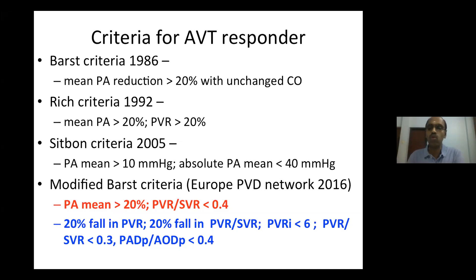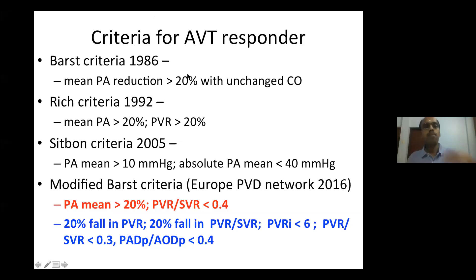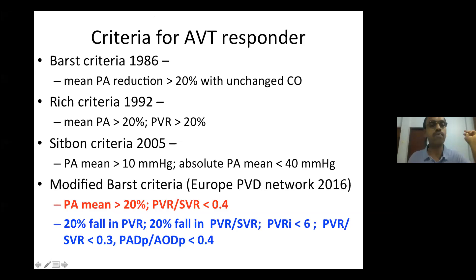In centers that don't have facilities for nitric oxide, oxygen is the most acceptable option. Coming to the acute vasodilator testing response — until 2005, this was primarily used for idiopathic pulmonary arterial hypertension.